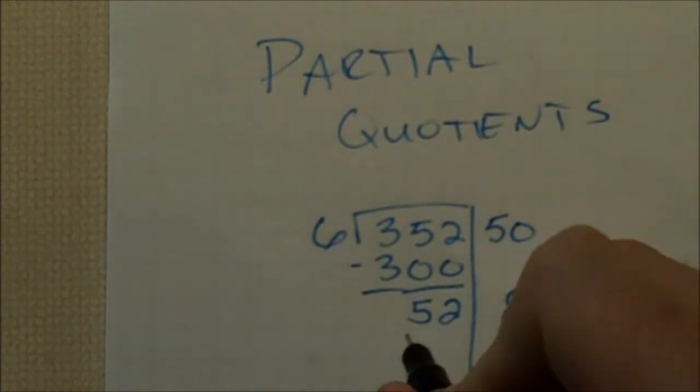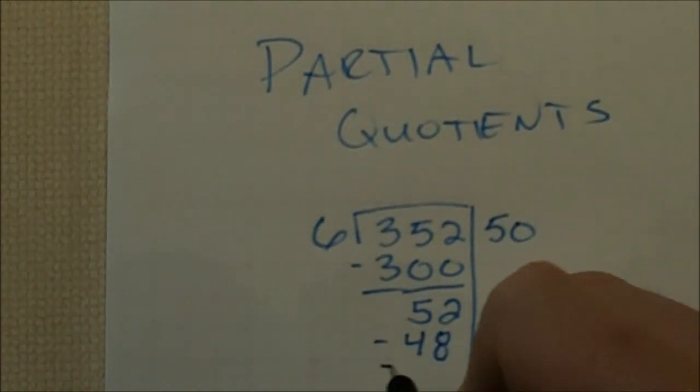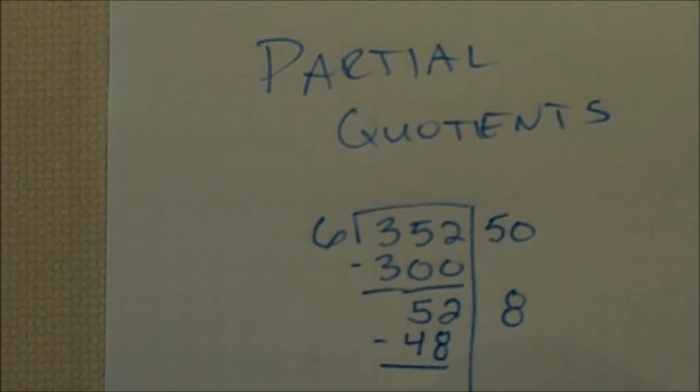8 times 6 is 48. Put our 48 below, and we subtract. 52 minus 48.